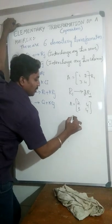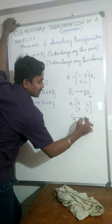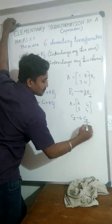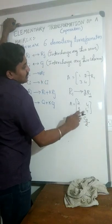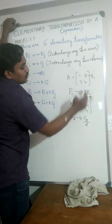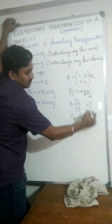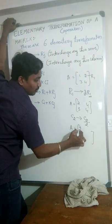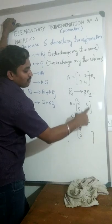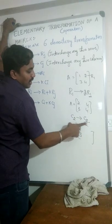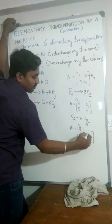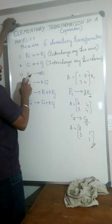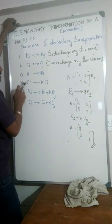In the same way, if I operate on column 2 elements: C2 tends to C2 divided by 2. Column 2 elements are 4, 4. The resultant matrix keeps column 1 elements as they are, but column 2 elements — I have 4, 4 — divide by 4. 4 divided by 4 is 1, and 4 divided by 4 is 1. This is how we apply elementary transformations 3 and 4.